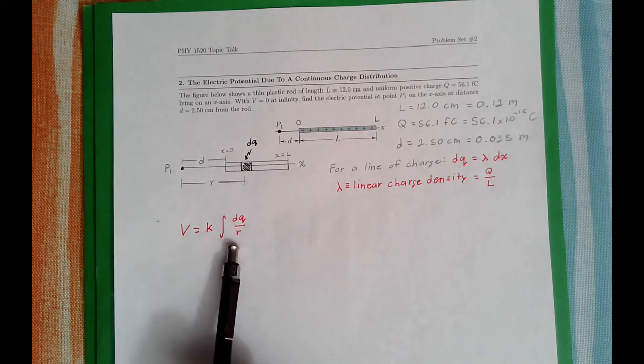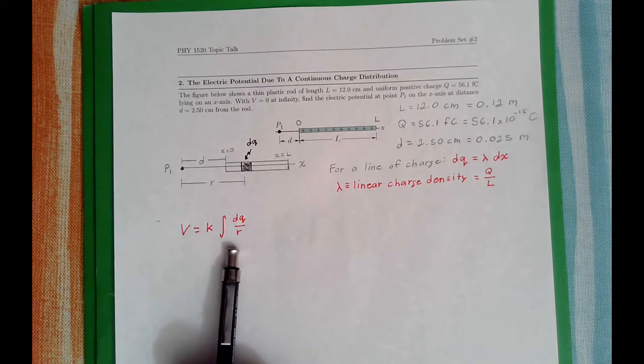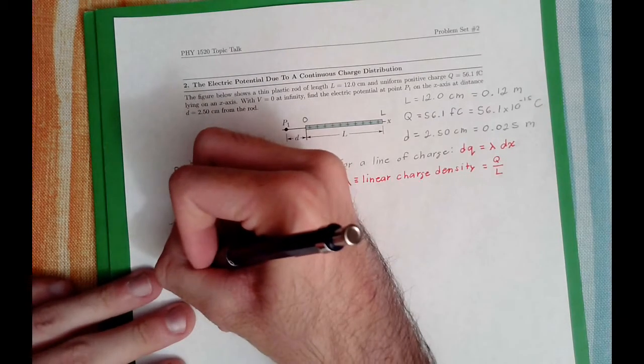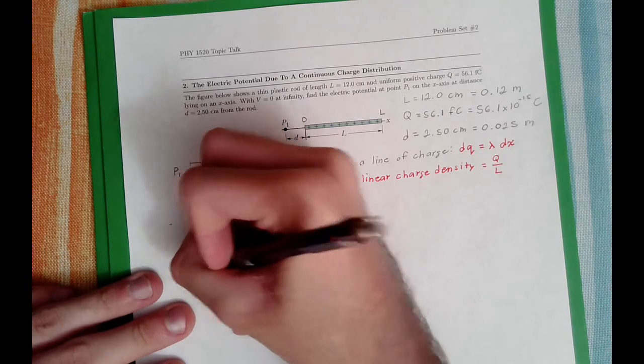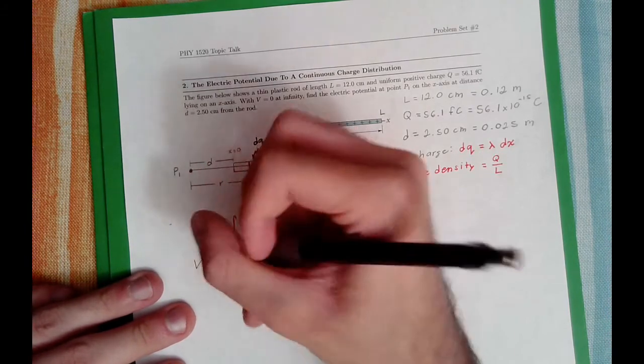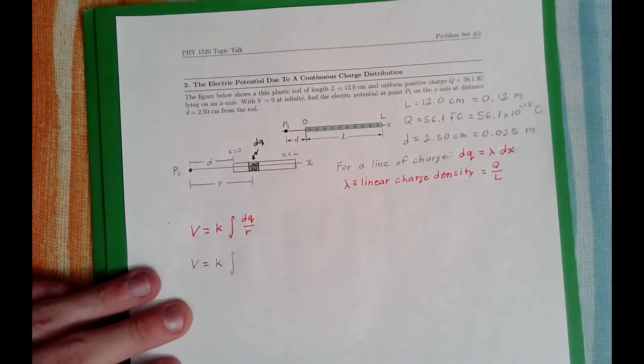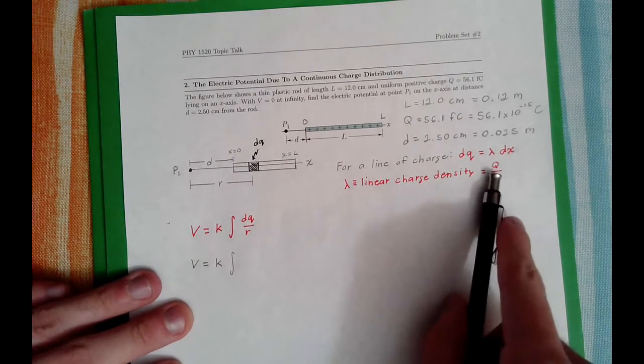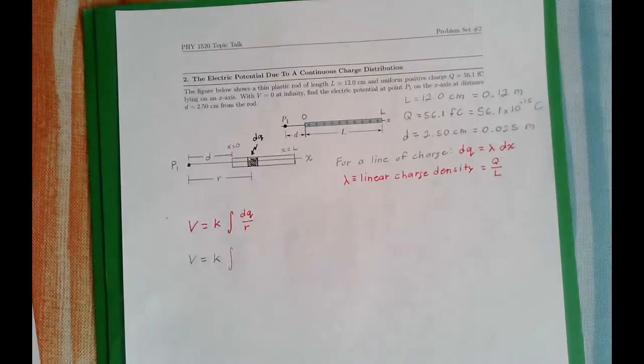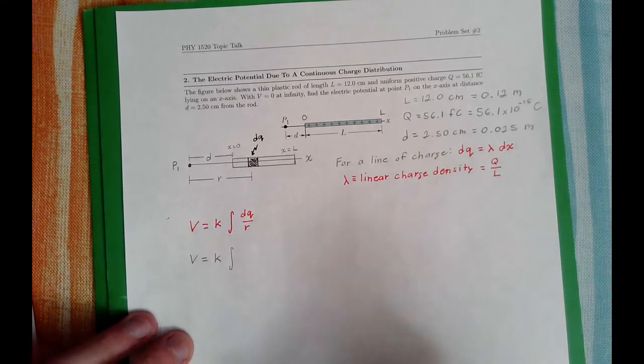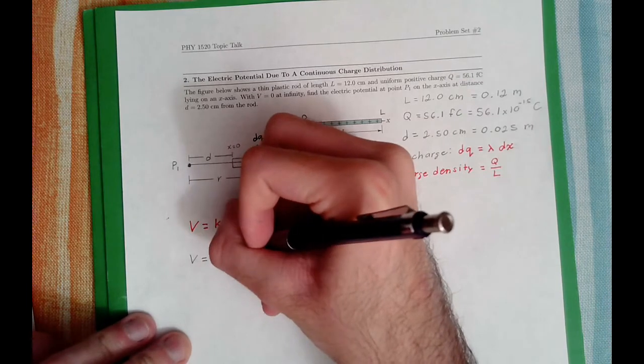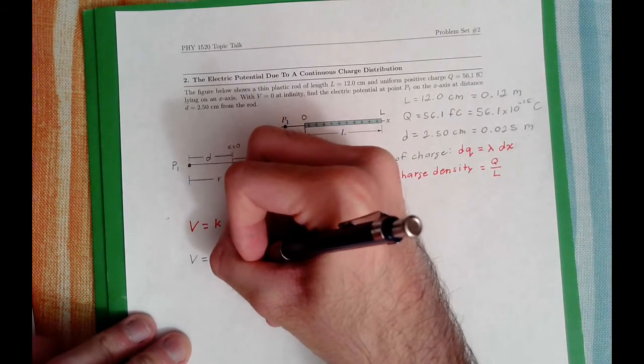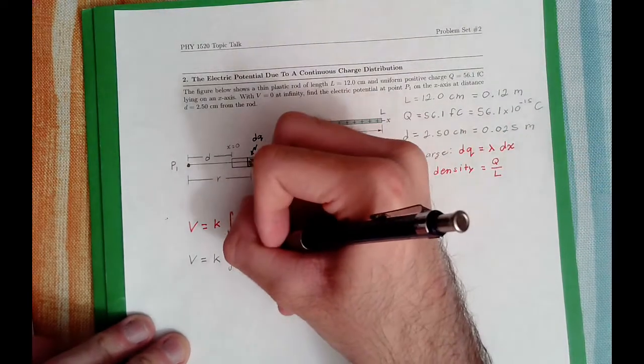So let's go ahead and figure what this integral should be. V is equal to K, which is just a constant, the integral of DQ. For a line of charge, such as a rod, we have lambda DX. And lambda is this Q over L. So I can say DQ is Q, the charge, divided by L, the length of the rod, times DX.